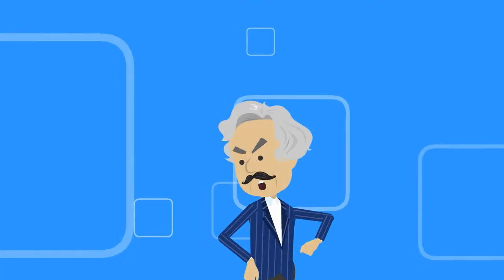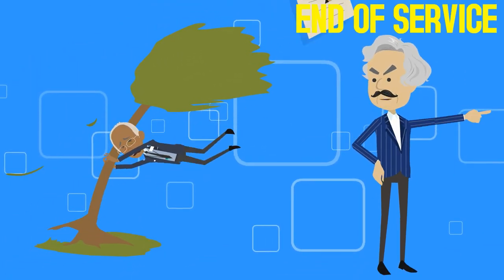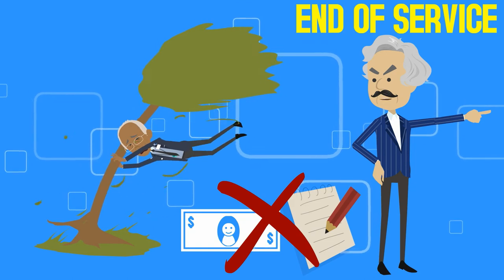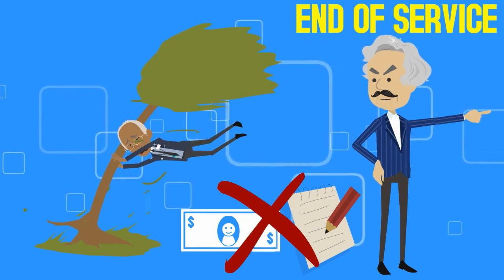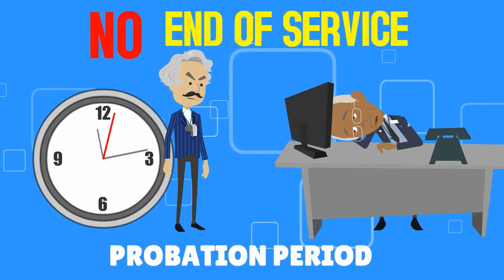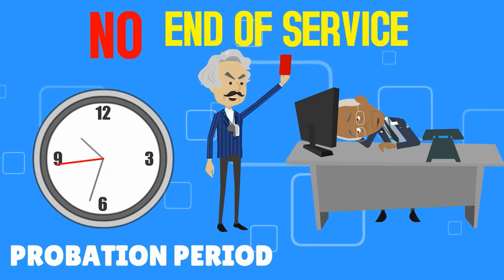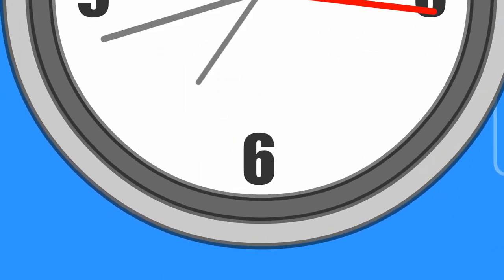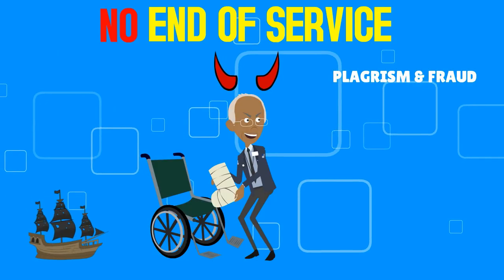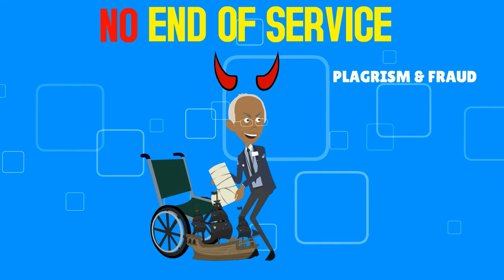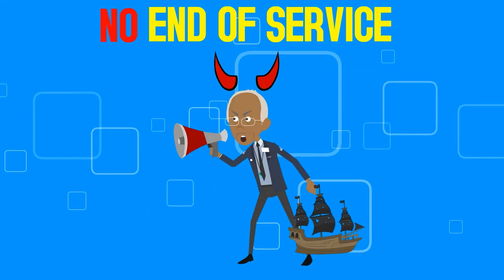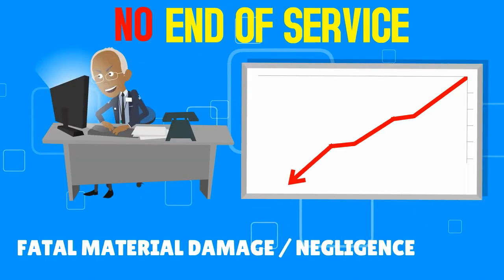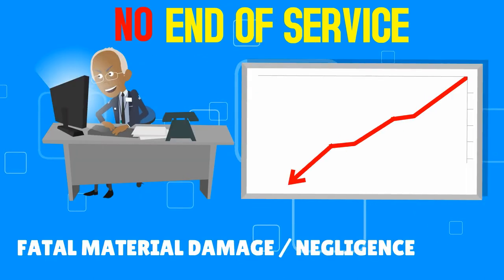However, the employer can terminate the employee without notice or paying end-of-service in specific cases. The employee does not get his end-of-service if the employer terminates him during the six-month probation period, or if the employee commits active fraud or dishonesty — such as disclosing work secrets to a third party — or if the employee's mistake caused fatal material damage to the employer, or if the employee neglected his main duties at work.